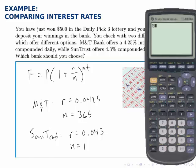So, I'll calculate $500 times 1 plus the first interest rate, 0.0425 divided by 365, the first N, and then raise that to the power of 365 times 1. So, M&T at the end of the year will hold $521.71.